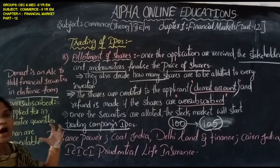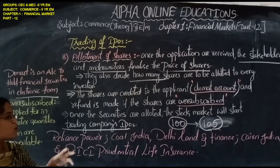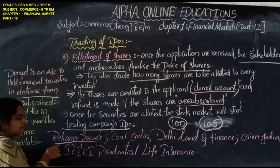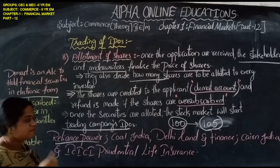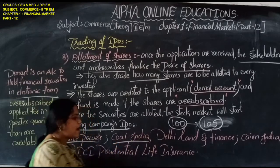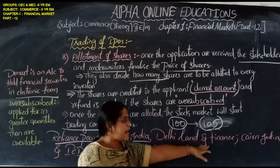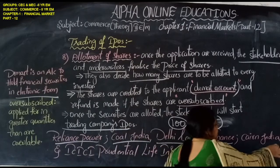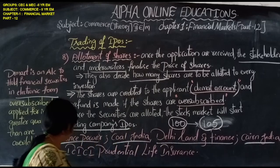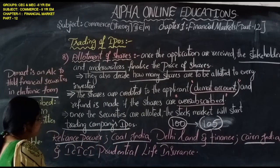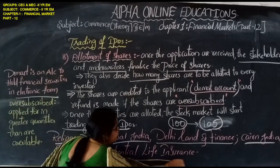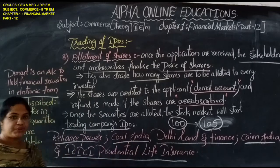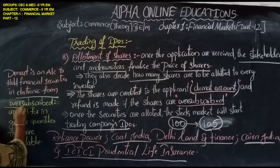Some of the top IPO examples are Reliance Power, Coal India, Delhi Land and Finance, and ICICI Prudential Life Insurance — all of which were oversubscribed.